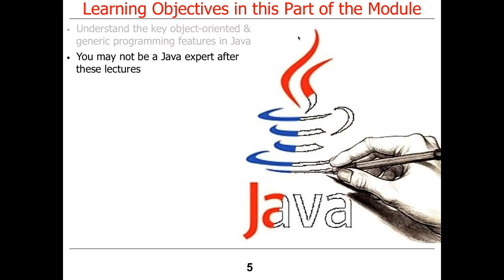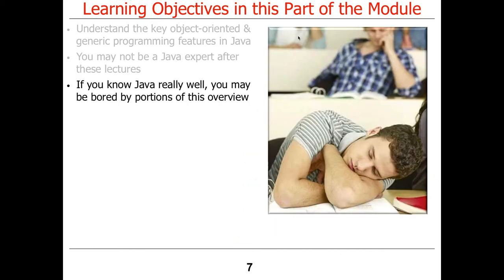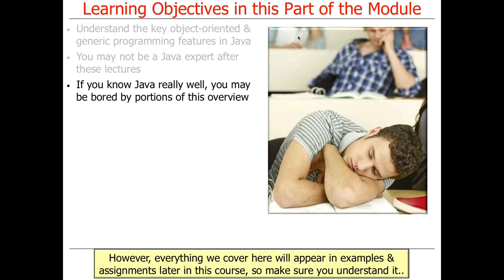By the time we're done with this lecture and the couple ones that relate to it, you probably will not be a Java expert yet, unless you already happen to be one, because that's not the goal. However, you'll be able to know how to do all the assignments, and you'll get a chance to become a Java expert by the time the course is done. If you really know Java well, then some parts of the intro may be a little dull, because I'm going to mention the six parts of a method, for example. But just be patient — that'll go by fast.